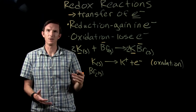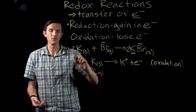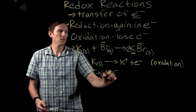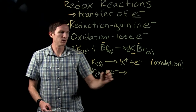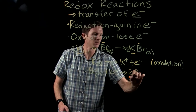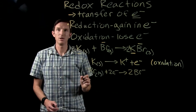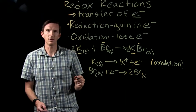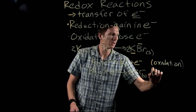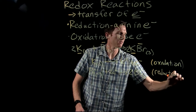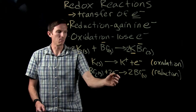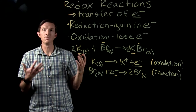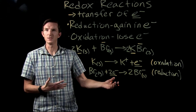Then we look at bromine. Our bromine is being reduced — gaining those electrons. In Br₂, each bromine atom gains an electron and becomes negatively charged, forming Br⁻ as part of the solid potassium bromide. So we have reduction occurring with our bromine: bromine gains electrons, potassium loses electrons.